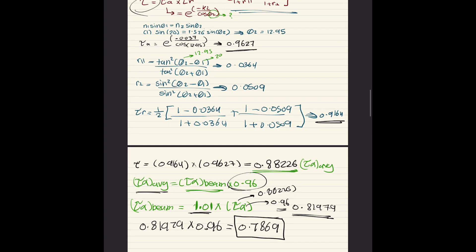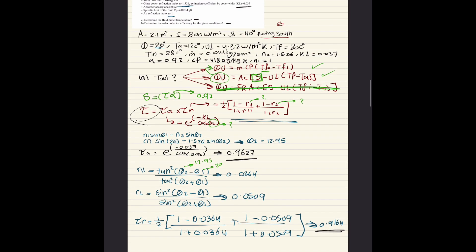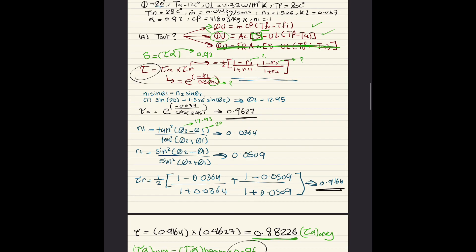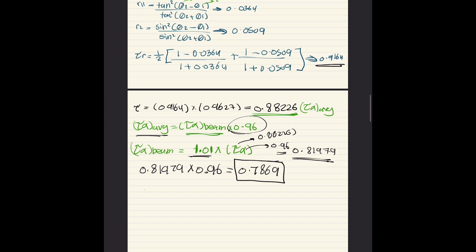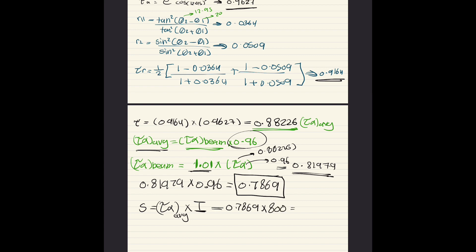Now the aim of all this was to get S. S is basically tau alpha average times I. So 0.7869 times the radiation that's given in the question, which is 800, we get an answer of 629.552 watts per meter squared.